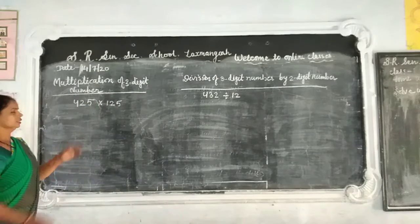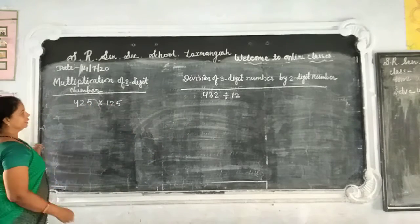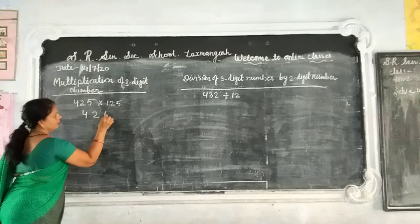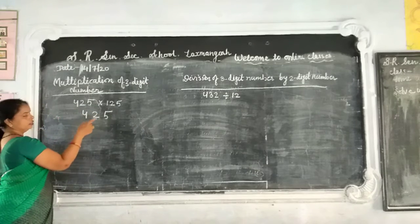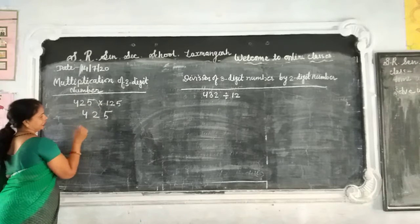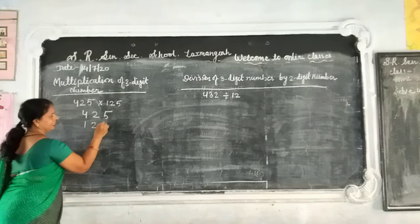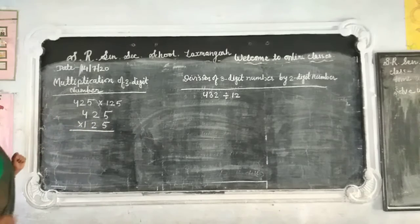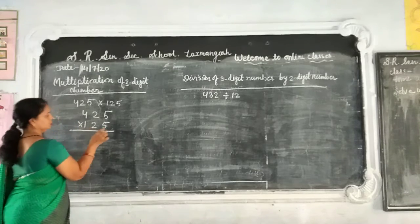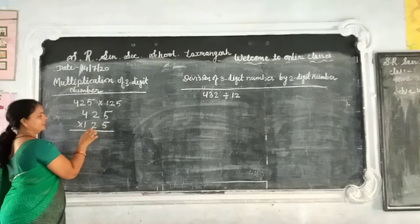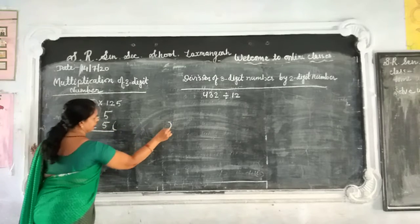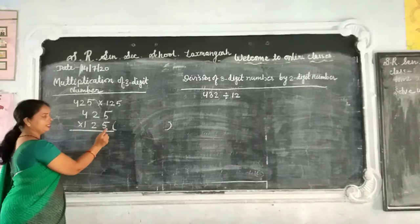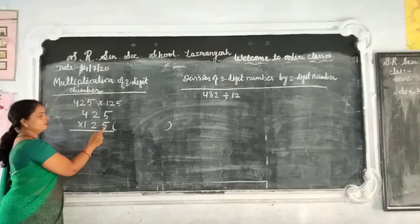Now, how to solve this method? We will learn how to solve this. First, we will set 425. We will place the 2nd number below the 1st number, with 1 and 5 in the ones place, 2 in the tens place, and 5 in the ones place correct.